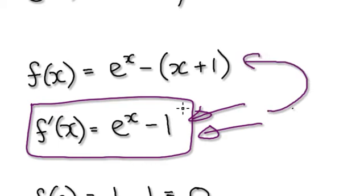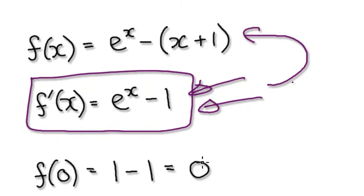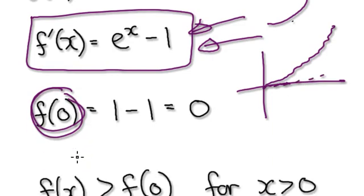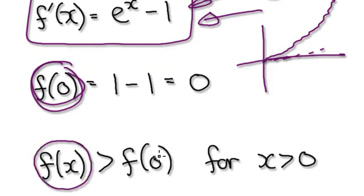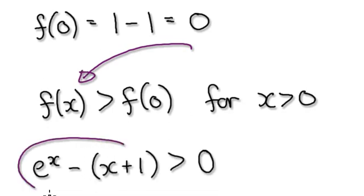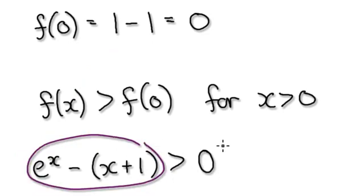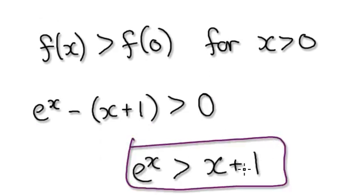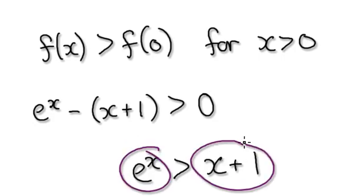If the original function is always climbing and your lowest point is f of zero, then anything to the right of f of zero must be bigger than the lowest point, because the graph is always climbing. So put the original f of x — which was defined as e^x minus x minus 1 — into the inequality. That will always be greater than zero, and then adding that block to both sides gives you the result. So we've proved that e^x must always be bigger than x plus 1.